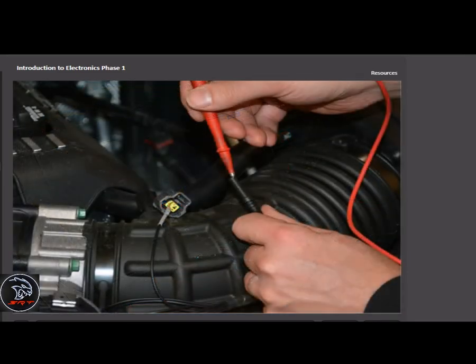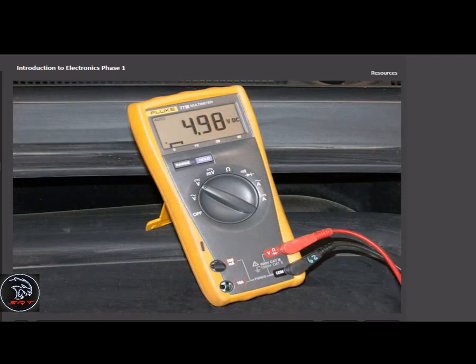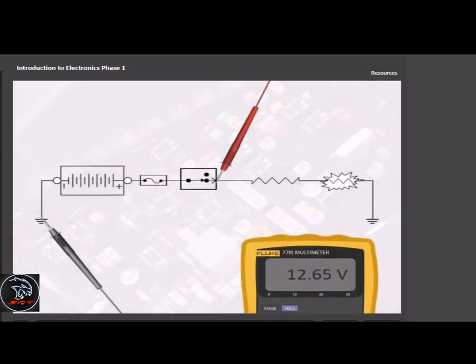To recap, open-circuit voltage testing is limited to verify available voltage and continuity. Closed-circuit testing can easily identify voltage drop caused by unwanted resistance.